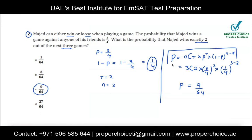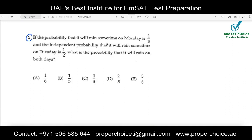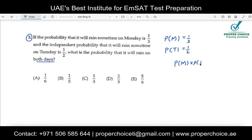Question number three: The probability that it will rain on Monday is 1/3, and the independent probability that it will rain on Tuesday is 1/2. What is the probability that it will rain on both days? Raining on Monday and raining on Tuesday are independent events, so we multiply. Probability of both = 1/3 × 1/2 = 1/6. That is option A.